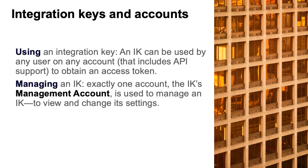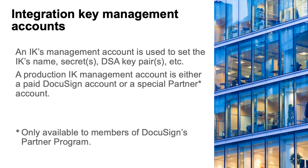An integration key can be used by any user on any account that includes API support to obtain an access token. You do not have to enable access to an account — all IKs can always be used by any account. Exactly one account, the IK's management account, is used to manage an IK, to view and change its settings. When you create an IK in demo, the account you use becomes the management account for the new IK. When you use the go-live process to enable the IK on production, you choose which paid production account will also become the production management account for the IK.